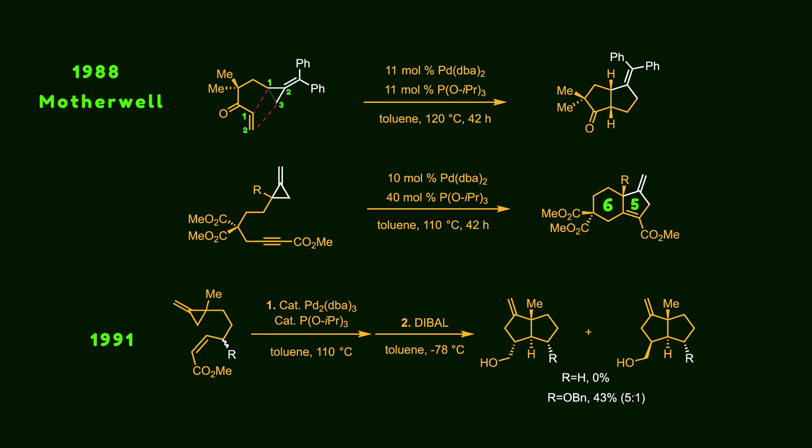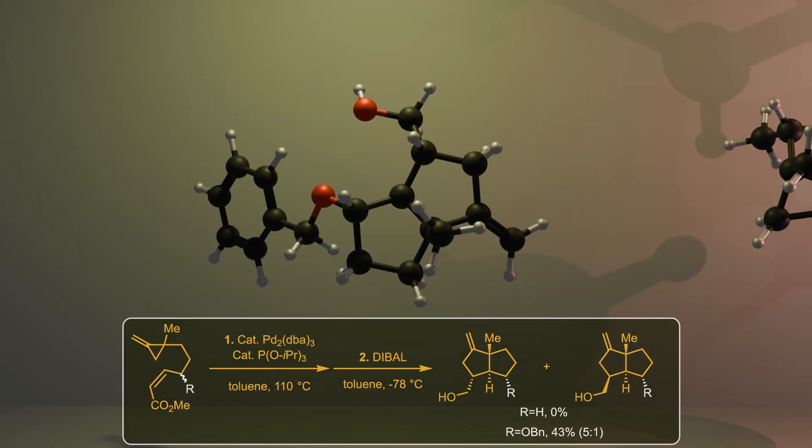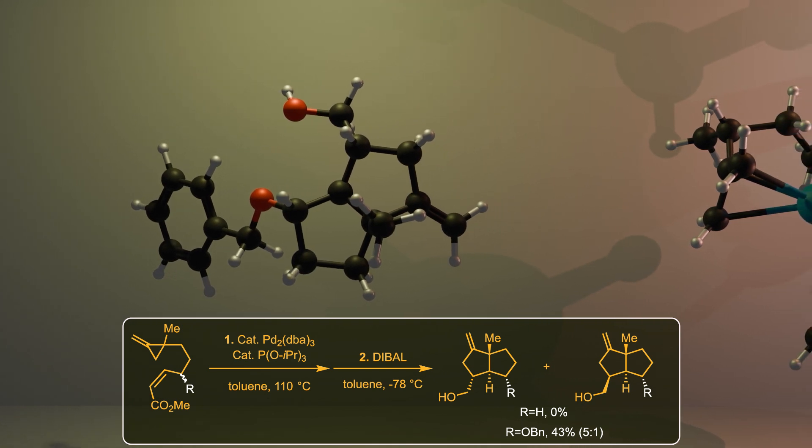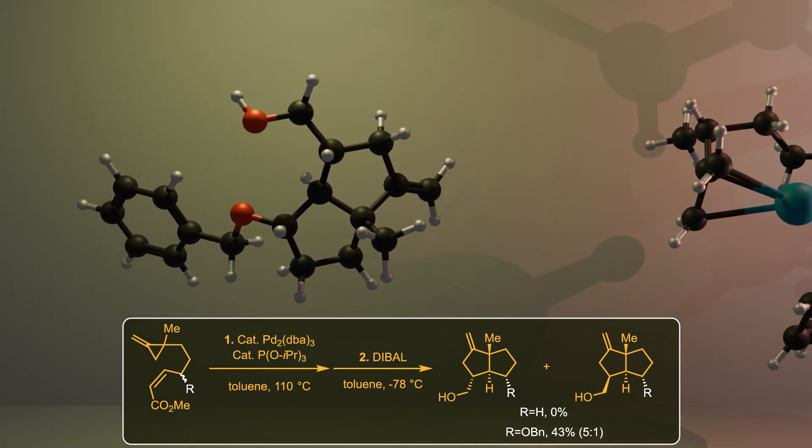In 1991, the group found that the presence of a hetero atom assists the transformation. Notice that when R is hydrogen, no desired product is observed, but when R is a benzoyl group, a fused ring system is produced. It's also interesting that the fused ring system is trans, which is thermodynamically less stable than the cis product.